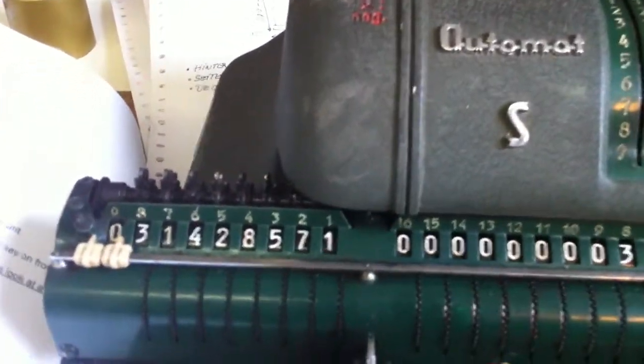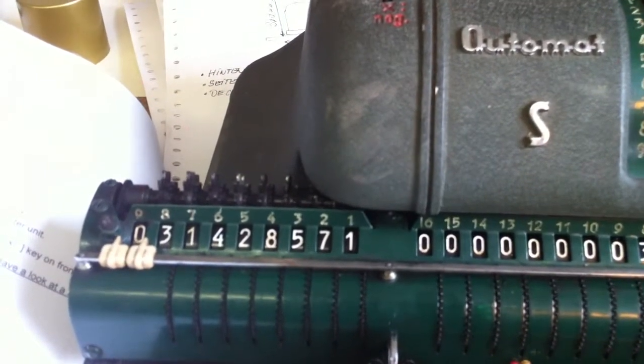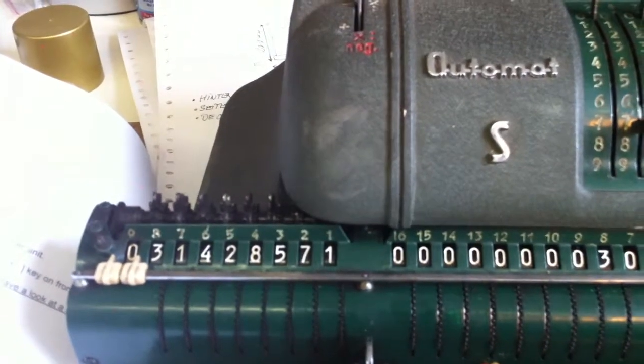So here we have the result: 3 1 4 2 8 5 7 1, which is an approximation of pi.